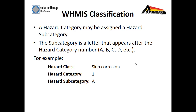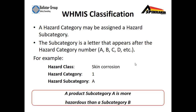A hazard category may be assigned a hazard subcategory. The subcategory is a letter that appears after the hazard category number — A, B, C, D, etc. For example, when you have a hazard class such as skin corrosion, the hazard category could be number one, and the hazard subcategory could be A. A product subcategory A is more hazardous than a subcategory B.